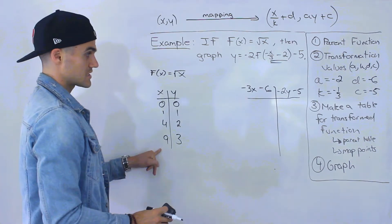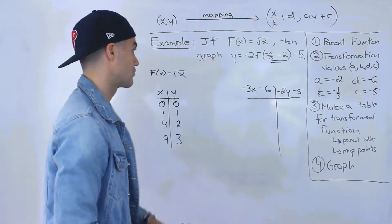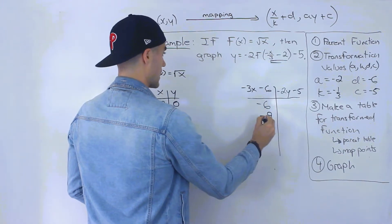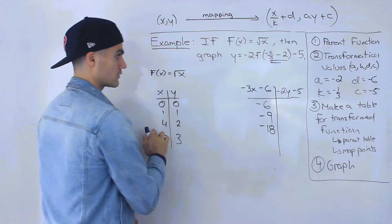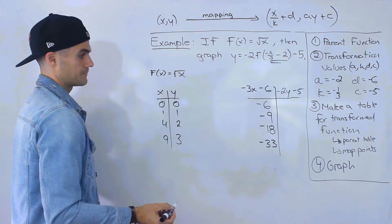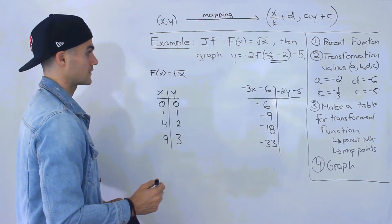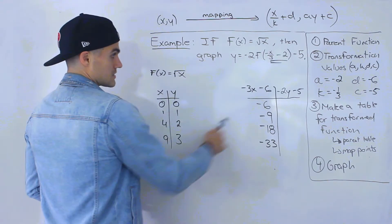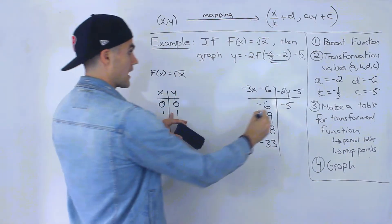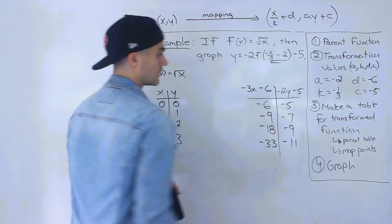Applying the mapping: plugging in x values 0, 1, 4, 9 gives new x values of negative 6, negative 9, negative 18, and negative 33. For the y values: negative 2 times 0 minus 5 gives negative 5; then negative 7, negative 9, and negative 11. So our transformed table has points (−6, −5), (−9, −7), (−18, −9), and (−33, −11).